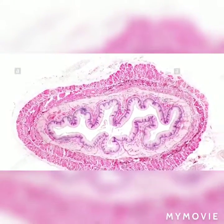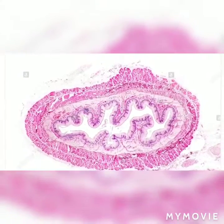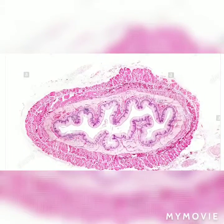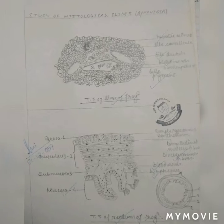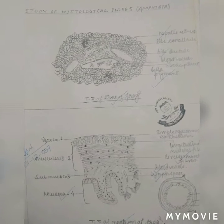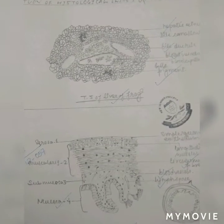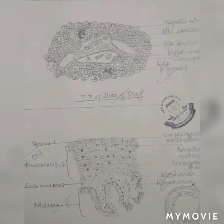Comments on TS of esophagus of frog: it is composed of the usual four layers, that is serosa, muscularis, submucosa, and mucosa. The serosa is thin and made up of a single layer of peritoneal cells. The muscularis has muscle fibers arranged in two layers: an outer longitudinal and an inner circular layer.